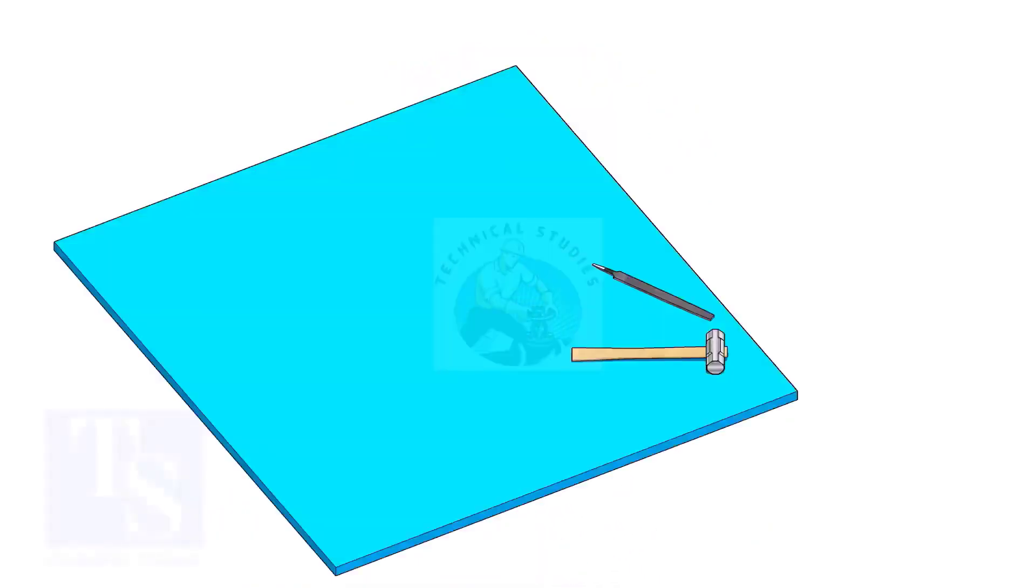The flange face may get damaged during fabrication. Use a non-metallic sheet like a Teflon sheet, thin hardboard, or piece of CNAF gasket sheet, as shown in the video.